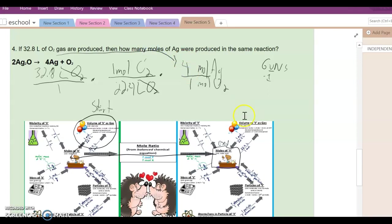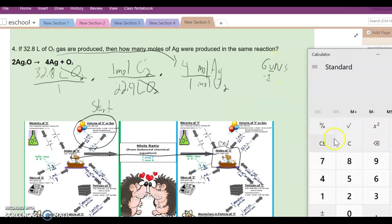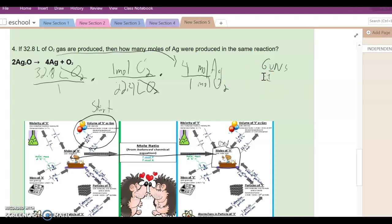Great, now let's do some math. 32.8 times 4 equals 131.2, divided by 22.4.